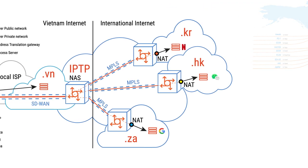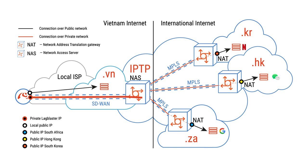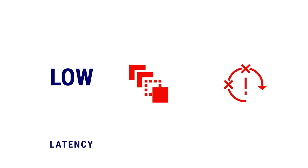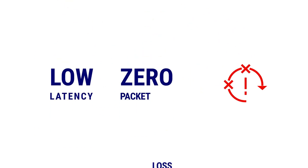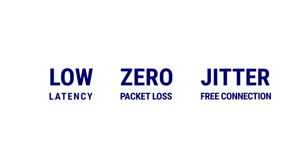At the destination country, we have network address translation gateways that translate the source private IP of the Lag Blaster users to the destination country's IP address. This is crucial for maintaining low latency, zero packet loss, and jitter-free connections for our users to other countries.